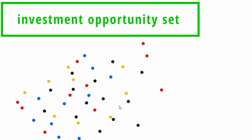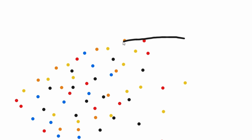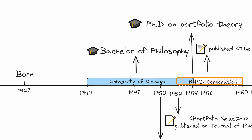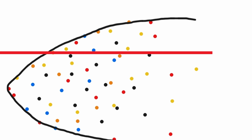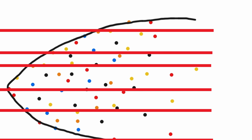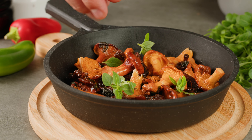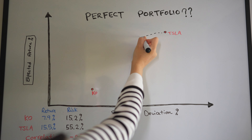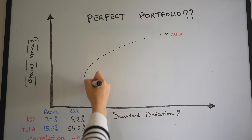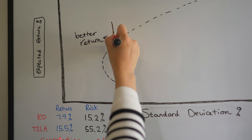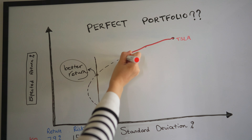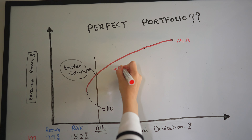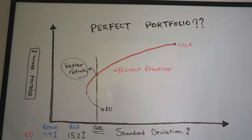Imagine plotting every possible combination of risky assets on a graph, searching for the perfect balance. This is where Harry introduced us to the efficient frontier, with cooperation from George Dantzig. It was a revolutionary idea suggesting there's a sweet spot portfolio that offers the highest returns for a given level of risk. As a risk-averse investor, we would only want to pick portfolios on the upper part of the hyperbolic boundary — this upper part is called the efficient frontier, representing the combination offering the best possible expected return for a given risk level.